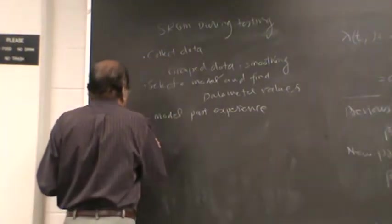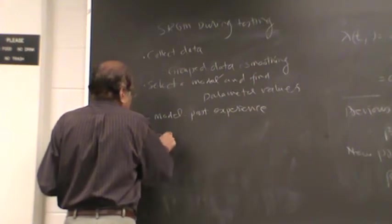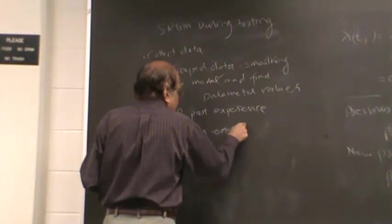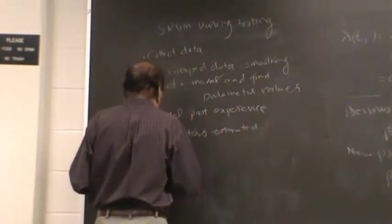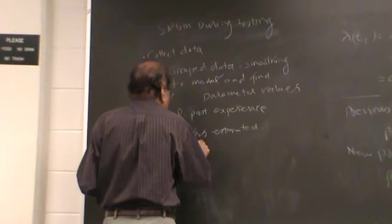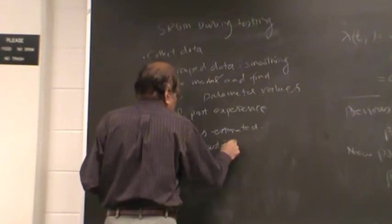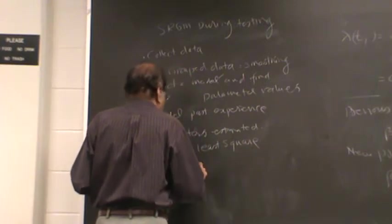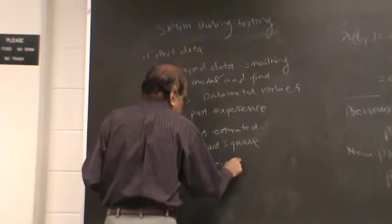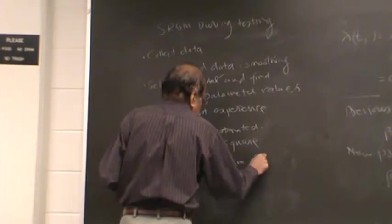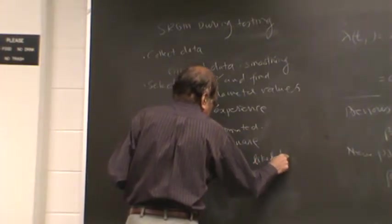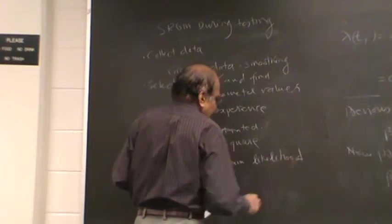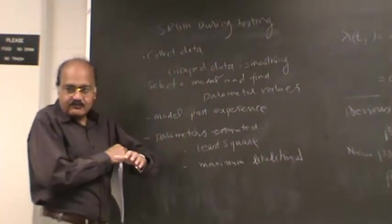So you have parameters estimated. You can estimate parameters using a least squares method, or you can use maximum likelihood. These are the two common statistical approaches for doing a fitting, for estimating parameters.